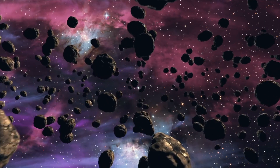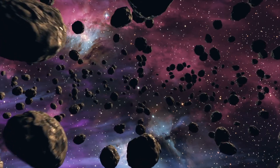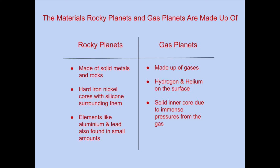The materials rocky planets and gas planets are made up of. Rocky planets, as the name suggests, are made up of solid metals and rocks. These planets share common materials like hard iron nickel cores and silicon surrounding them, with much more metals like aluminum and lead also found in other layers, but in lesser amounts. Gas planets are mainly made of gases, with hydrogen and helium on the surface, although they have a solid core in the middle due to the immense pressure of gas surrounding the core.